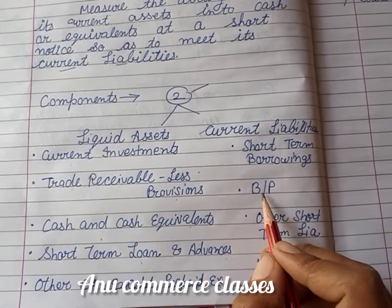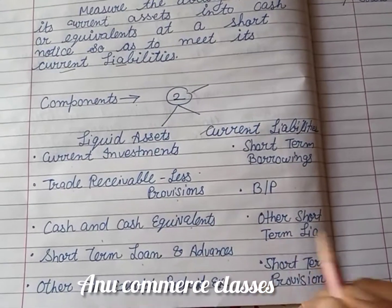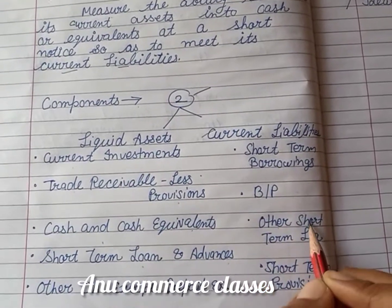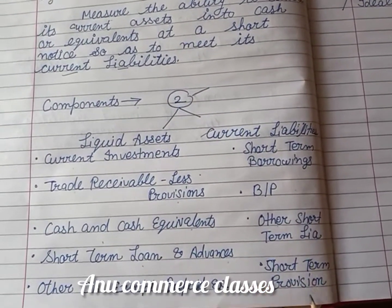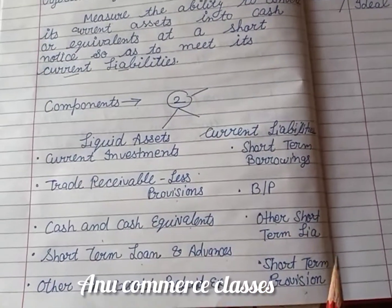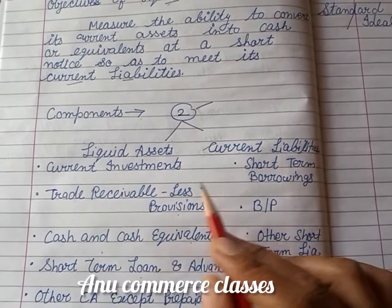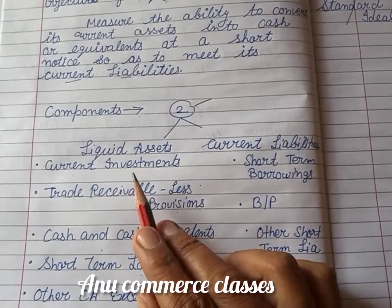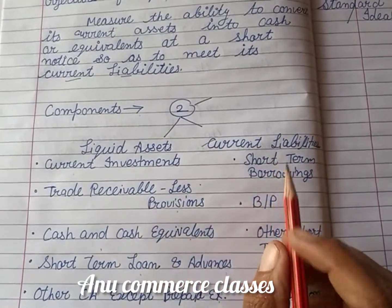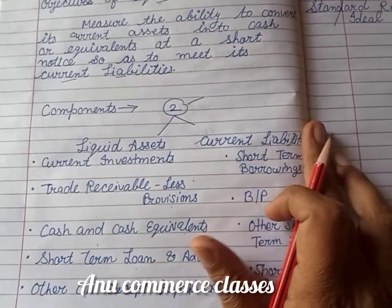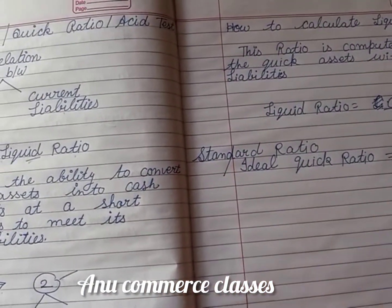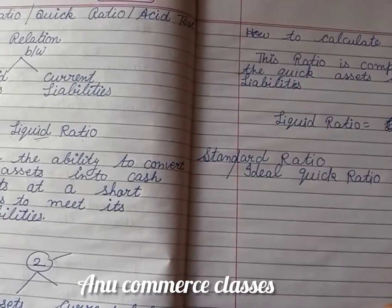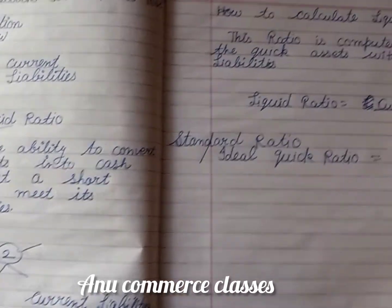Current liabilities include short-term borrowings, bills payable, other short-term liabilities, and short-term provisions. These are the liquid assets and current liabilities which are used when calculating the liquid ratio.